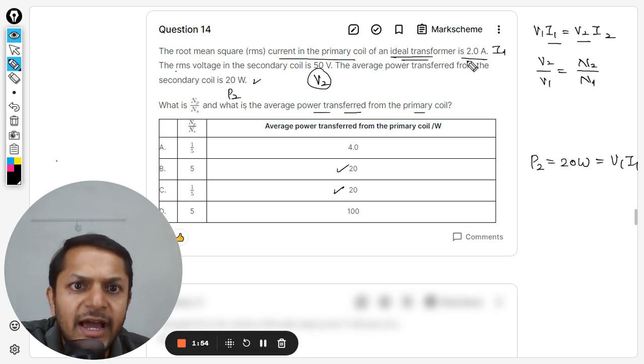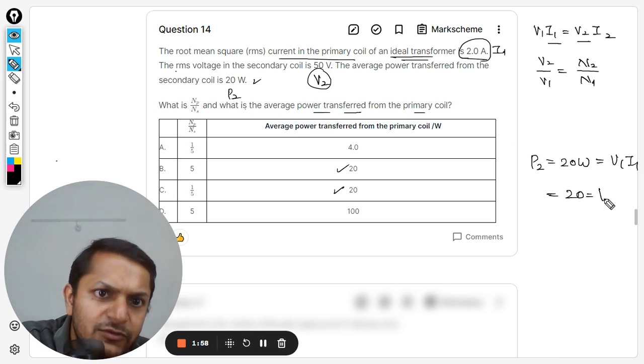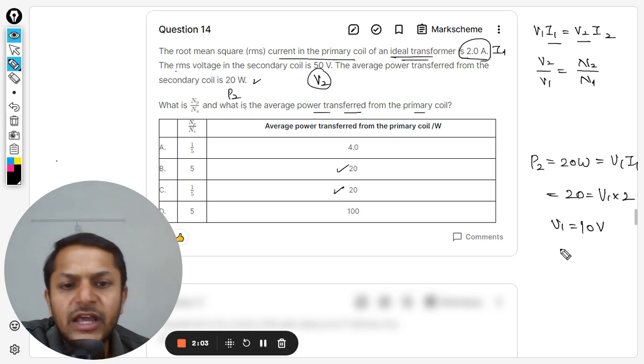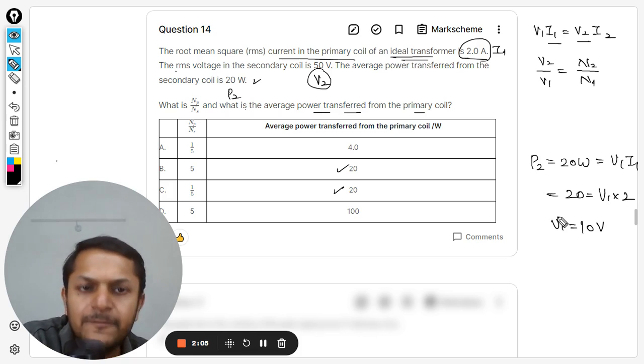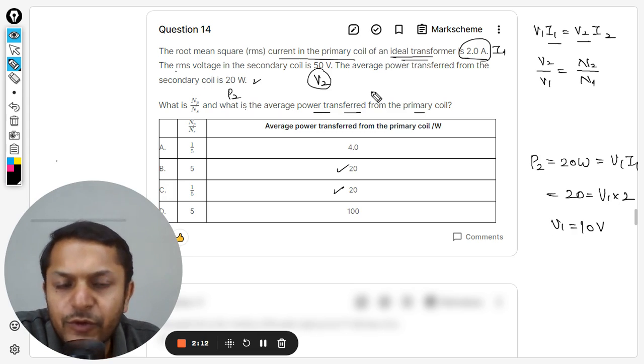So that will be equal to v1 i1, and i1 is 2. We want to find v1. So 20 is equal to v1 into 2, so clearly v1 is 10 volts. It means that vp, the primary voltage, is 10, and the secondary voltage has increased to 50 volts. Obviously, it is a step-up transformer—the current is reducing and the voltage is increasing.